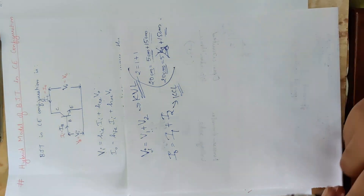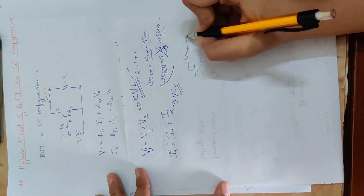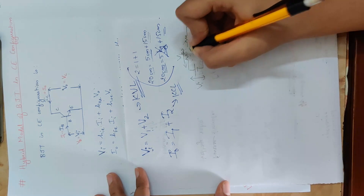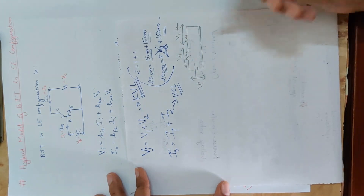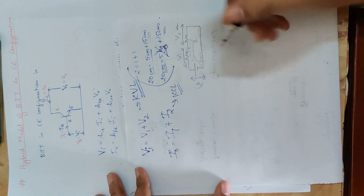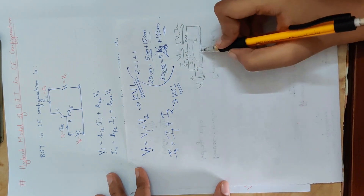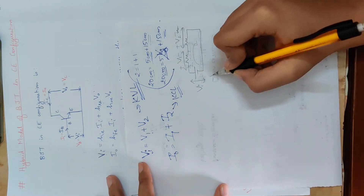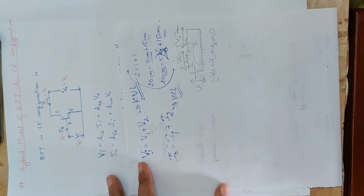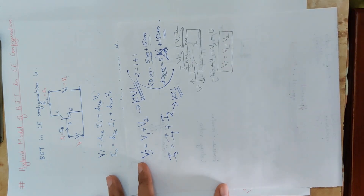Now let's take a basic circuit. This is Vi, V1, V2. Now let's apply KVL here: minus Vi plus V1 plus V2 equal to zero. That is Vi equal to V1 plus V2.